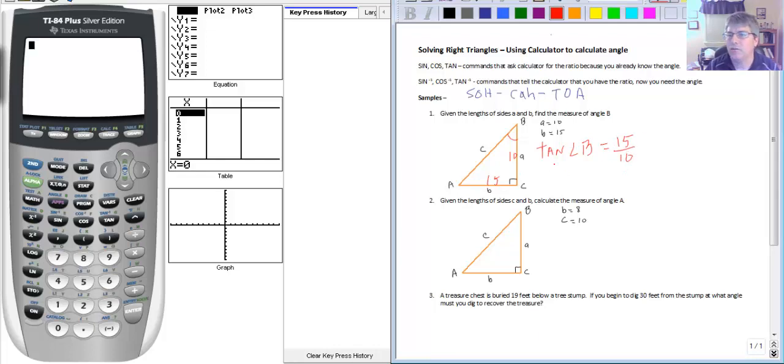And if you want you can go ahead and reduce that. The tangent of angle B equals 3 over 2. And this is ready to go. We can input this into our calculator. We have the ratio but I need the angle.